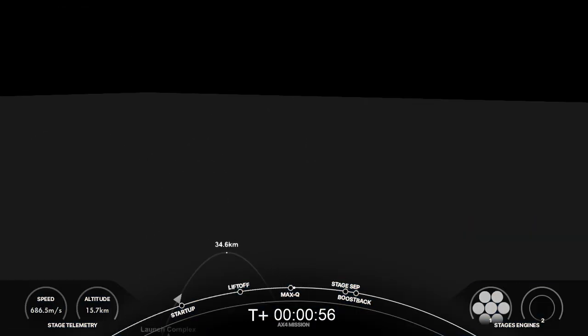Vehicle is supersonic. We should begin throttling the Merlin engines back up now. Stage one throttle up. Mission control confirming stage one Bravo. That throttle up and we are hearing our Commander Peggy Whitson call out the first abort mode.